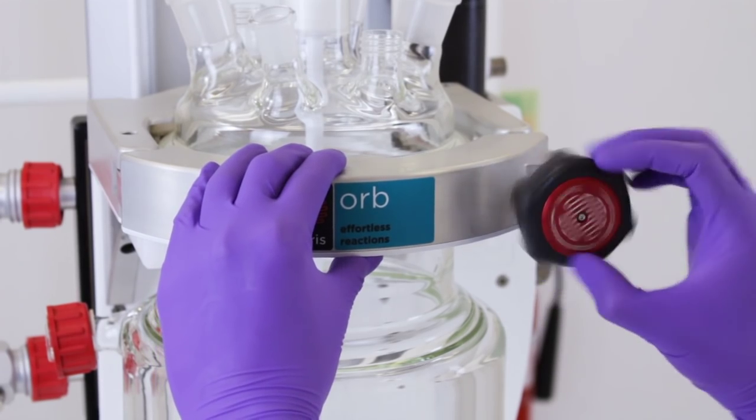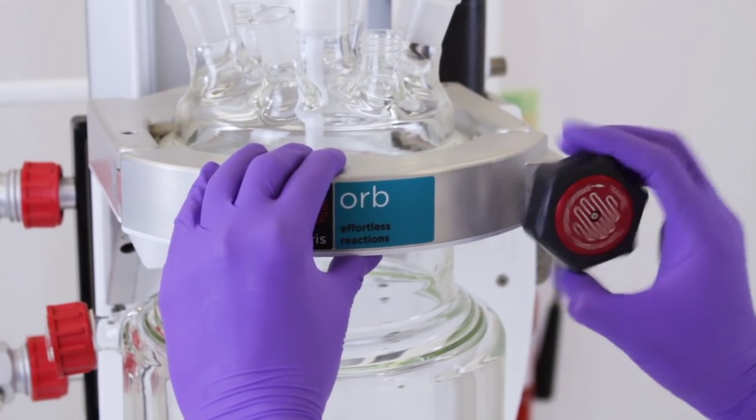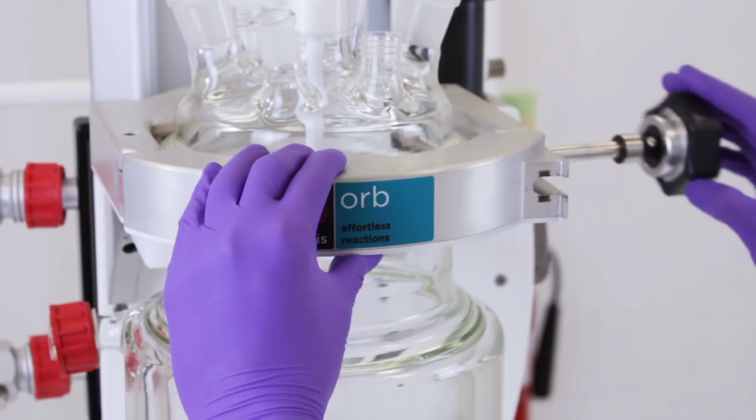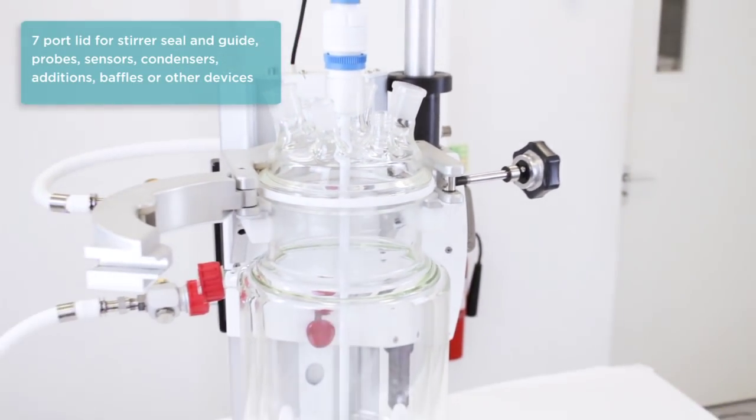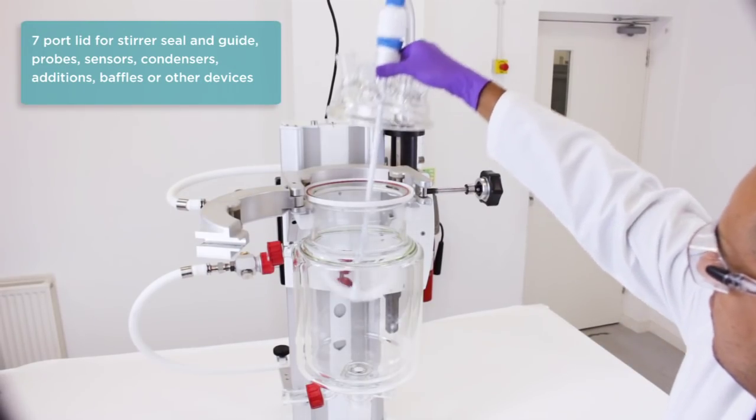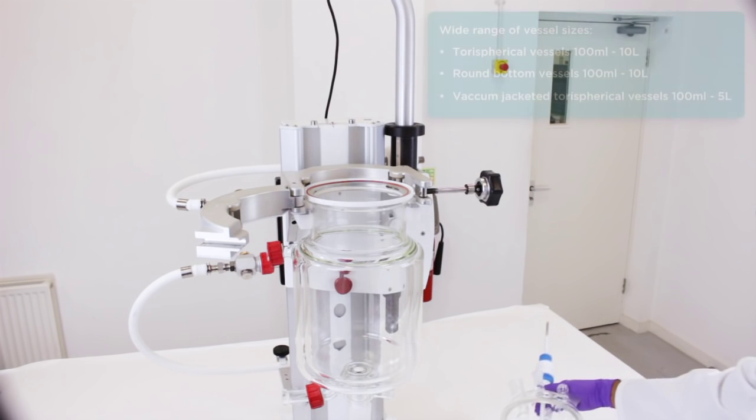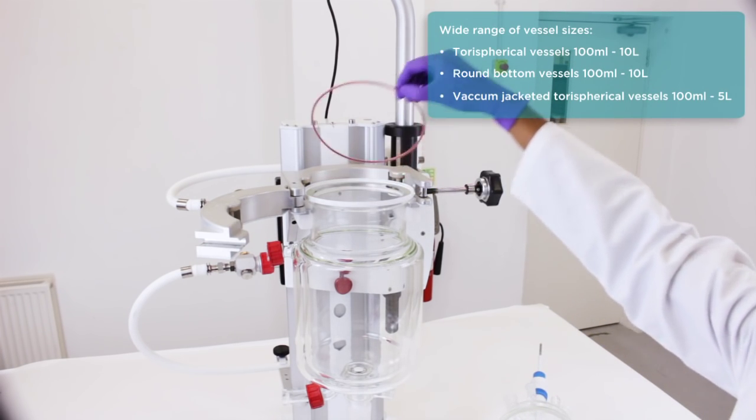The unique vessel clamp mechanism allows jacketed vessels to be added and removed without tools. The clamp can be opened by turning the clamp knob. The vessel remains in place with the clamp open and can then be easily lifted out and replaced.